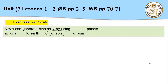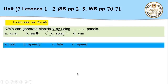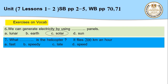All your answers are excellent — thank you! Number seven: what [blank] speed is the helicopter? It flies 200 kilometers an hour. Choices: fast, speedy, late, or speed. The only word that fits here is 'speed' because it is followed by a number and 'an hour.' 'How' is followed by an adjective — you can say 'how fast' but not 'how speed.' So the answer is: what speed is the helicopter? It flies 200 kilometers an hour.